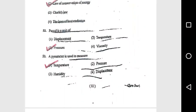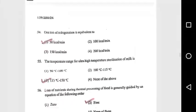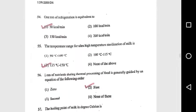Question 51: The first law of thermodynamics is a special case of the law of conservation of energy. Question 52: Pascal is a unit of pressure. Question 53: A pyrometer is used to measure temperature. Question 54: One ton of refrigeration is equivalent to 3.5 kW or 50 kcal per minute.